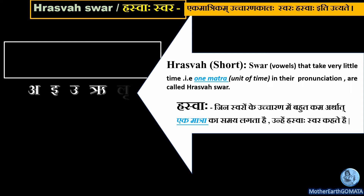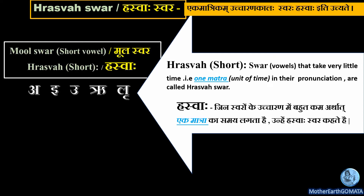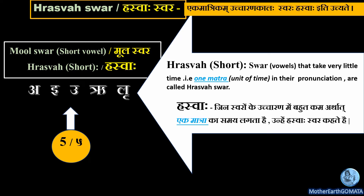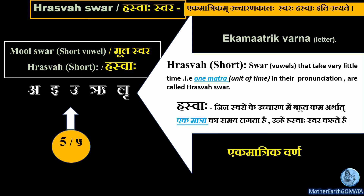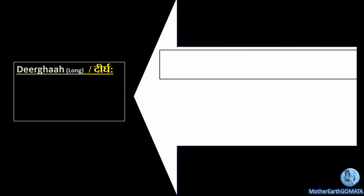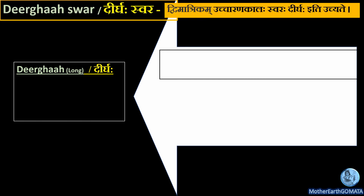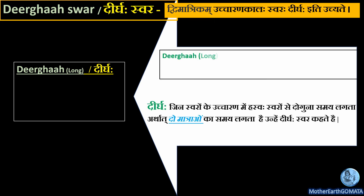The five Swar A, E, U, R, L — also known as Mool Swar — take very little time for their pronunciation, so they are also known as Hraswa Swar. In Sanskrit, 'Hraswa' means short. These five letters take short time for their pronunciation, hence they are known as Hraswa Swar. 'Ek matrikam' — 'Ek' means one — and the unit of time is expressed in Matra, so these five Swar are also known as Ek Matrik Varna.